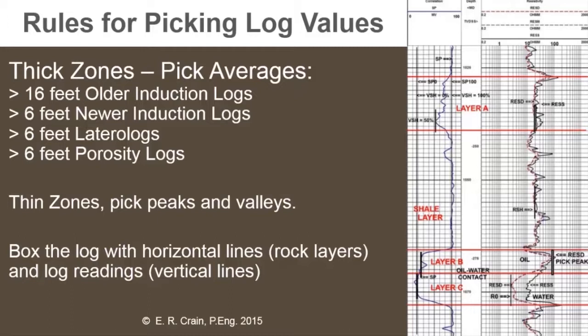In the case of older style induction logs, which are still available today, the bed resolution is much worse — more like 14 to 16 feet, about four or five meters. Here we have to pick peaks when the resistivity log reads a zone thinner than about 16 feet. We can't take an average like we could for the other logs.